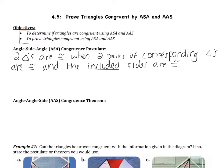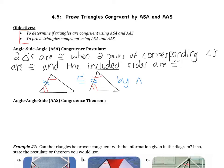This should remind you of SAS — you've heard of the included idea with SAS. If we draw two triangles, I need two pairs of corresponding angles that are congruent. Then I need the included sides — the sides that are holding together and connecting the two angles. So these triangles would be congruent by ASA.